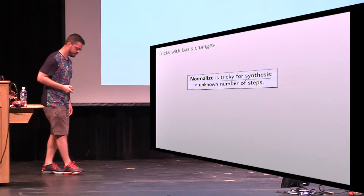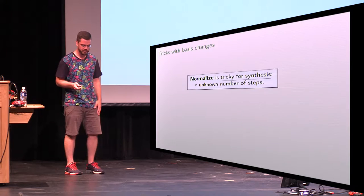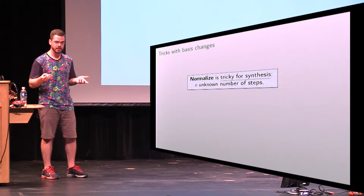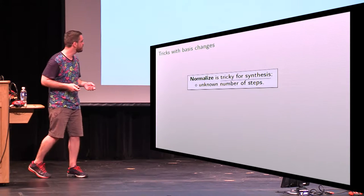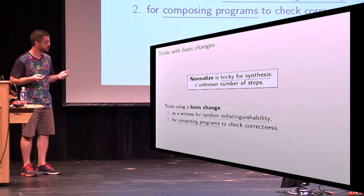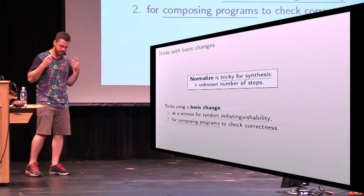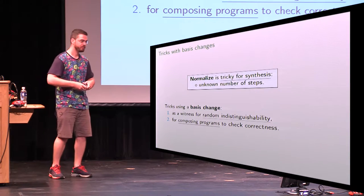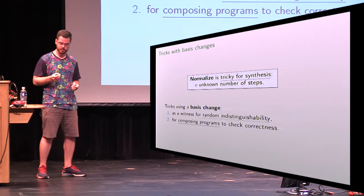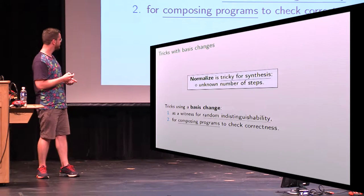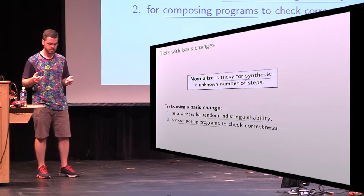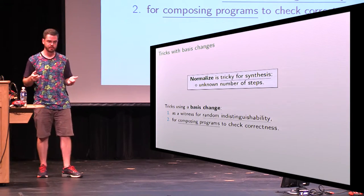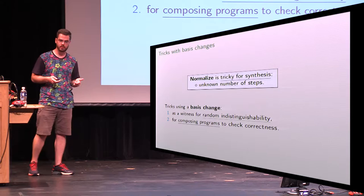This normalize function is kind of messy — we don't know how many times we need to iterate it to get to a canonical form. So this is bad for synthesis; we want to find some formula to give to an SMT solver. That's where the basis change comes in. We've got a couple of tricks that let us use the basis change for the things we need for synthesis — in particular, checking whether a function is indistinguishable from random, and composing programs to check correctness.